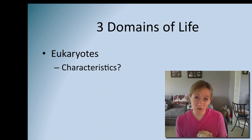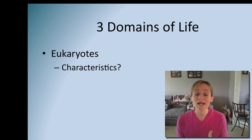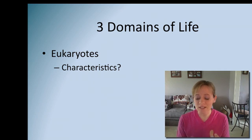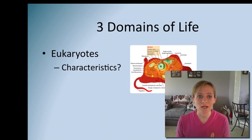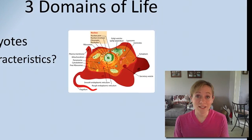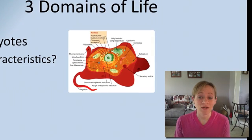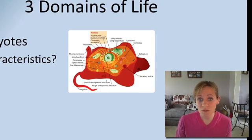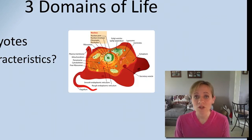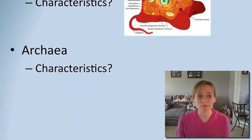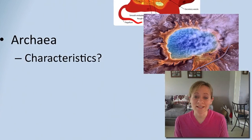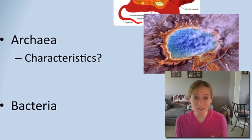Remember some of those characteristics — they have a nucleus, they have organelles, they have a cell membrane. This would be an example of an animal cell. Plants are also eukaryotes, so that's one domain. Another domain is archaea, and remember these like to live in really extreme environments.